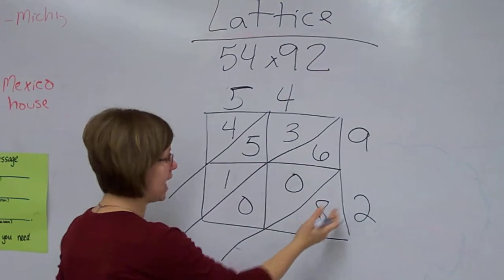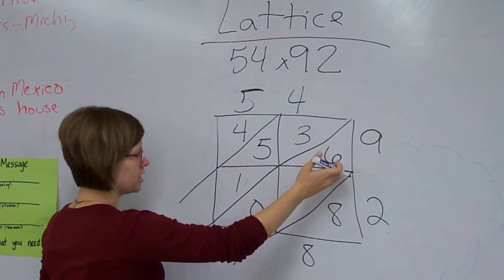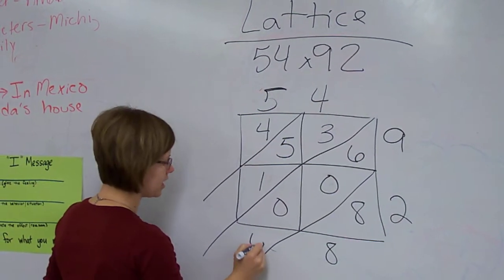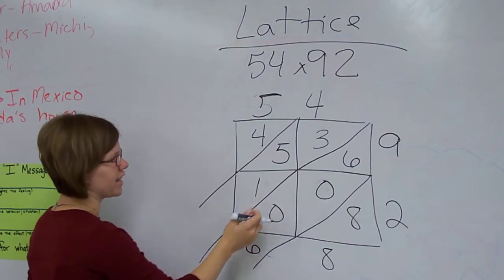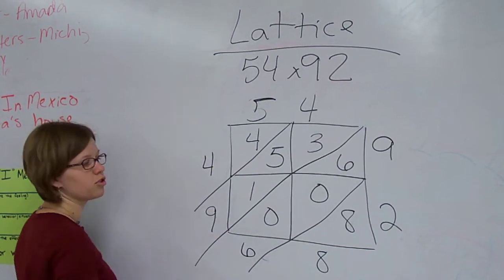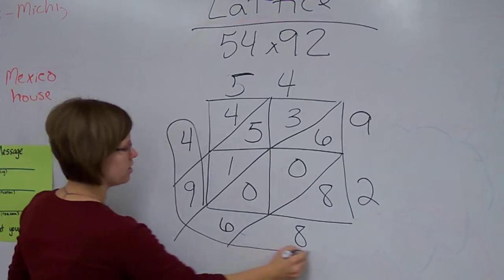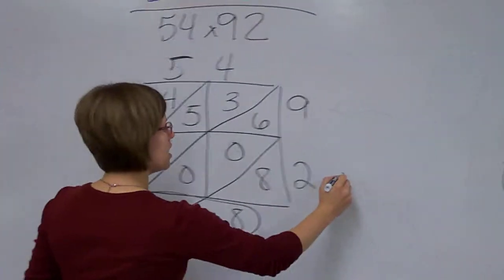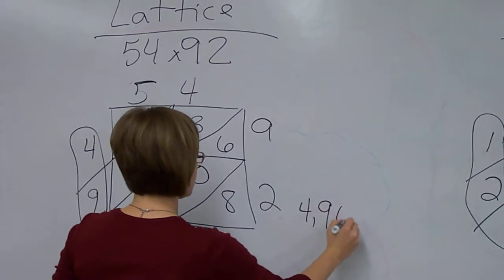Okay, now you're ready to add. 8, there's nothing else there, so you just pull it down. 6 plus 0 plus 0 is still 6. 3 plus 5 is 8, plus 1 is 9. 4 is just there by itself, so you just bring it down. So your answer here is going to be 4,968.